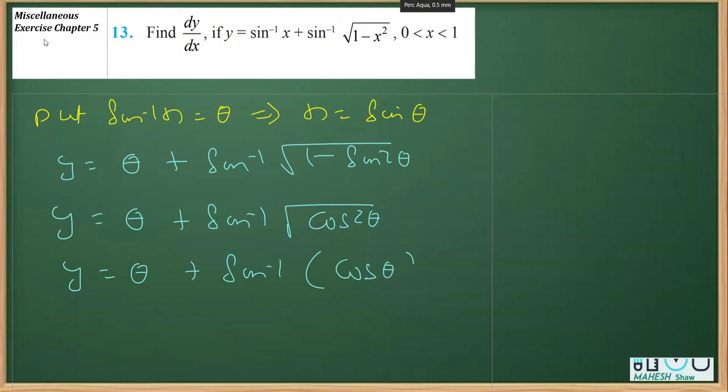Now we need to eliminate this sin inverse, so for that we can write cos theta as sin 90 minus theta, that is sin pi by 2.